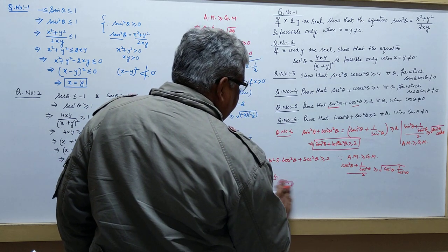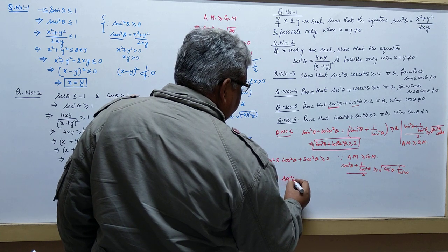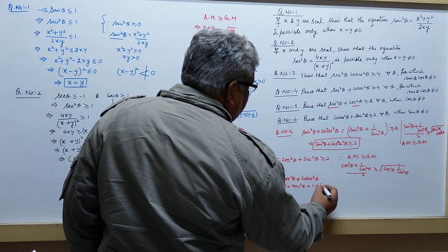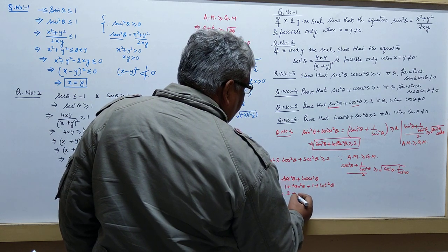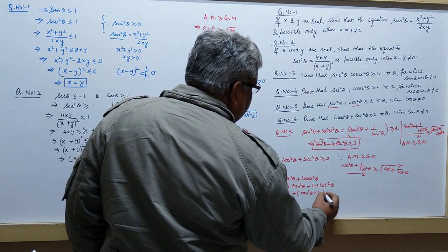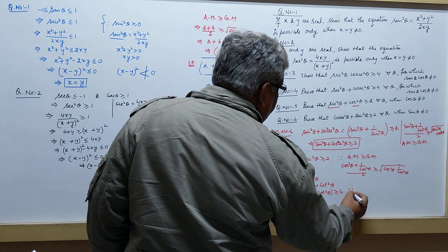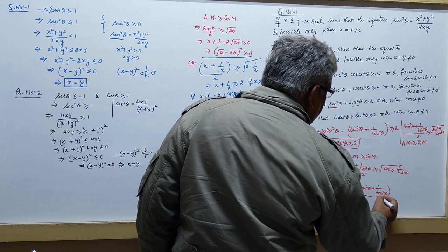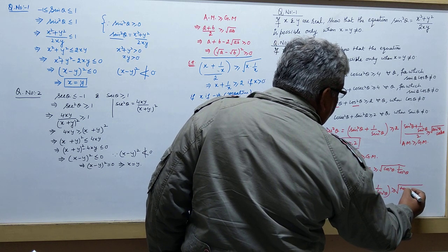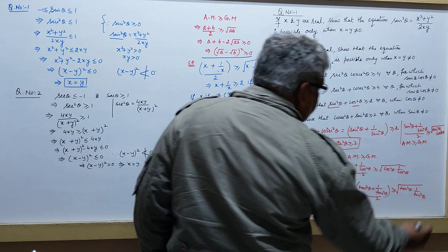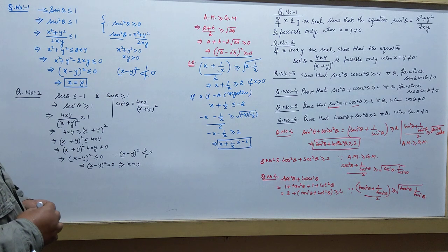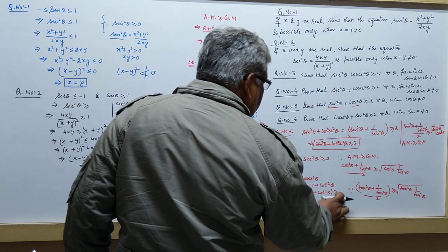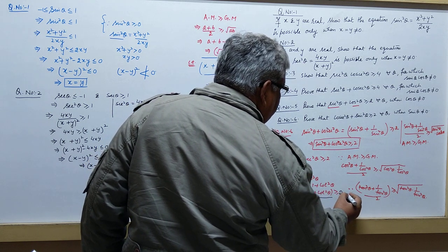For question number 5: secant squared theta is 1 plus tan squared theta, and cosecant squared theta is 1 plus cot squared theta. Adding them gives 2 plus tan squared theta plus cot squared theta, which is greater than or equal to 4. We show this because tan squared theta plus 1 by tan squared theta, by AM-GM, is greater than or equal to 2 times under root of tan squared theta times 1 by tan squared theta, giving tan squared theta plus cot squared theta greater than or equal to 2.